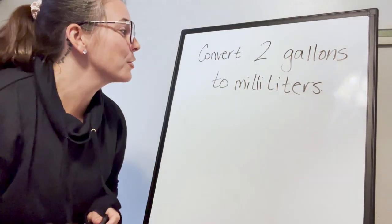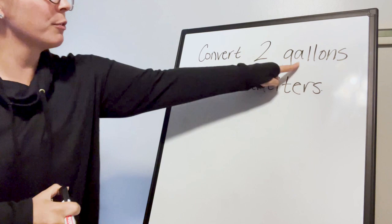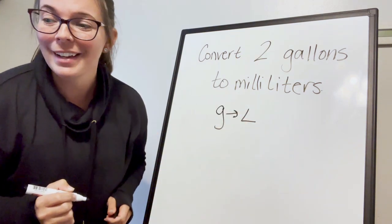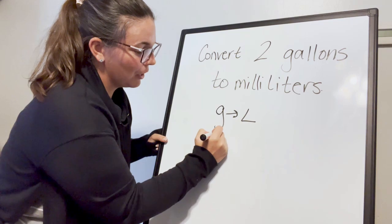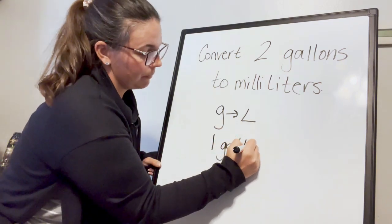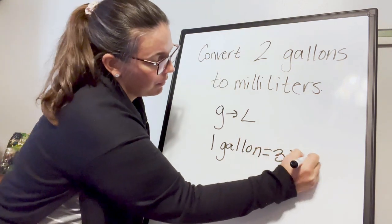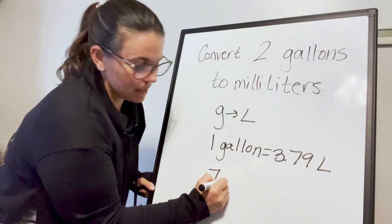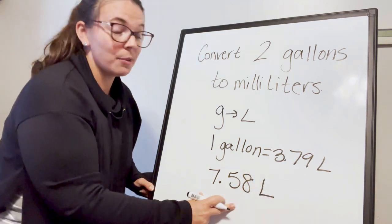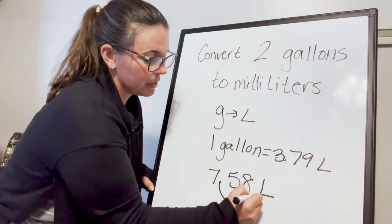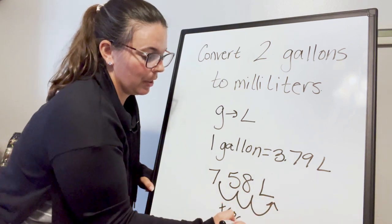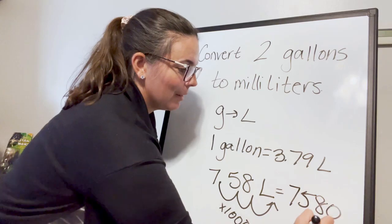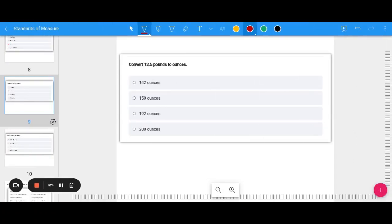Let's convert two gallons to milliliters. I know one gallon equals 3.79 liters, so two gallons equals 7.58 liters. Now I convert to milliliters by moving the decimal three times to the right — the same as multiplying by 1,000 — since there are 1,000 milliliters in a liter. That gives me 7,580 milliliters.